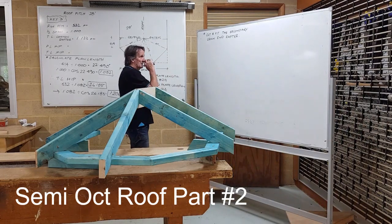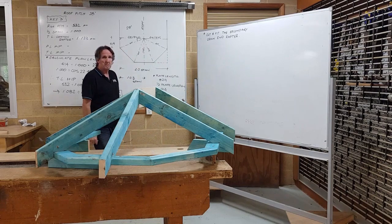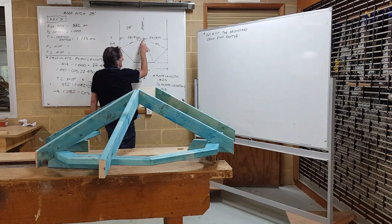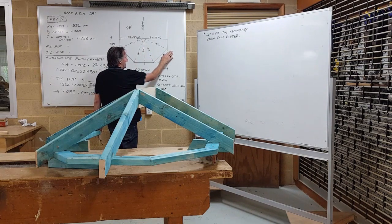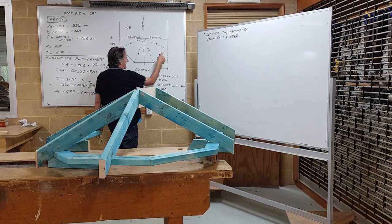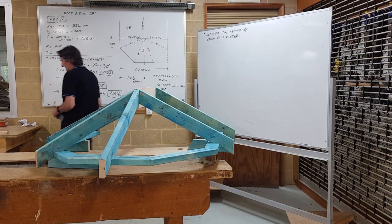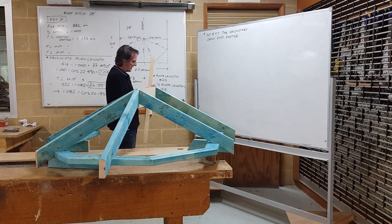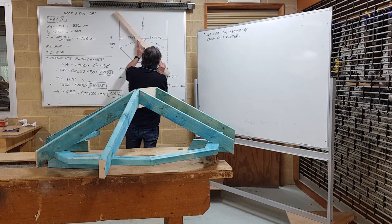We're going to move on to fitting the secondary crown end rafter. The secondary crown end rafter was the original hip. Now that corner has disappeared, sits back on distance A which is the end plate for the semi-octagonal. It becomes a crown end rafter due to the fact it is a roof component that's 90 degrees to the top plate.